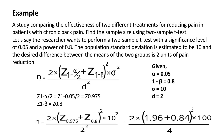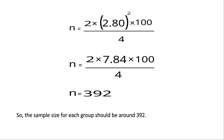Example: A study comparing the effectiveness of two different treatments for reducing pain in patients with chronic back pain. Find the sample size using the two-sample t-test. The researcher wants a significance level of 0.05 and a power of 0.8. The population standard deviation is estimated to be 10, and the desired difference between the means of the two groups is 2 units of pain reduction. By applying these alpha and beta values to find the z-scores and substituting all values in the formula, we get the answer as 392. So the sample size for each group should be around 392.